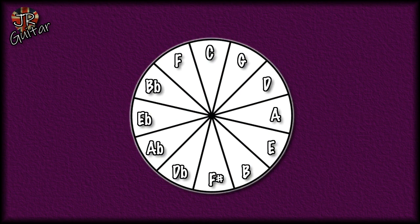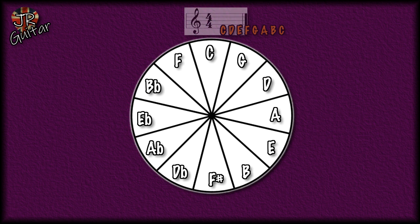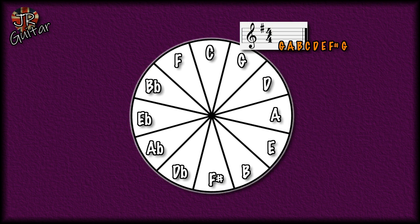Another use for the cycle of fifths is how to recognize key signatures. Maybe you're not interested in reading written music notation, but it does have its uses knowing how many sharps or flats are in any given key. The key of C major — C, D, E, F, G, A, B, C — has no sharps or flats. Moving around to the key of G, you get G, A, B, C, D, E, F sharp and G — so there is one sharp in the key signature of G major: F sharp.